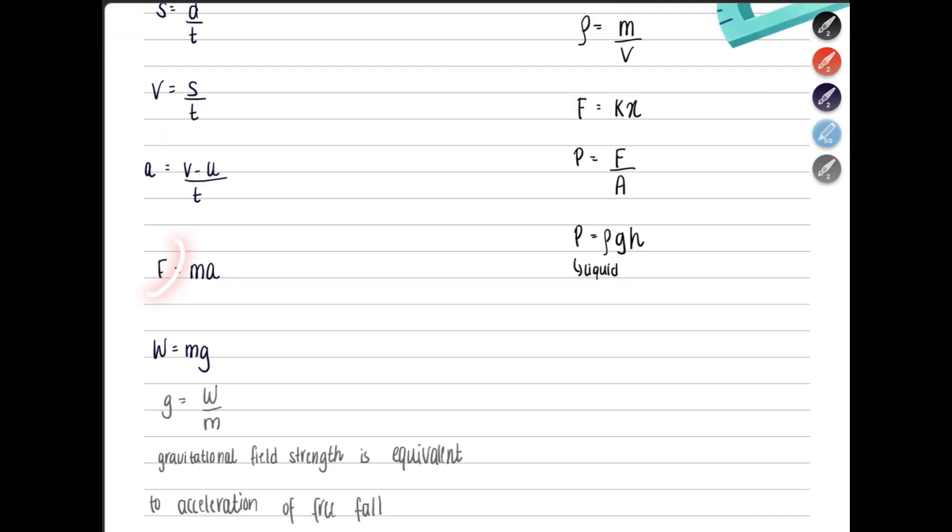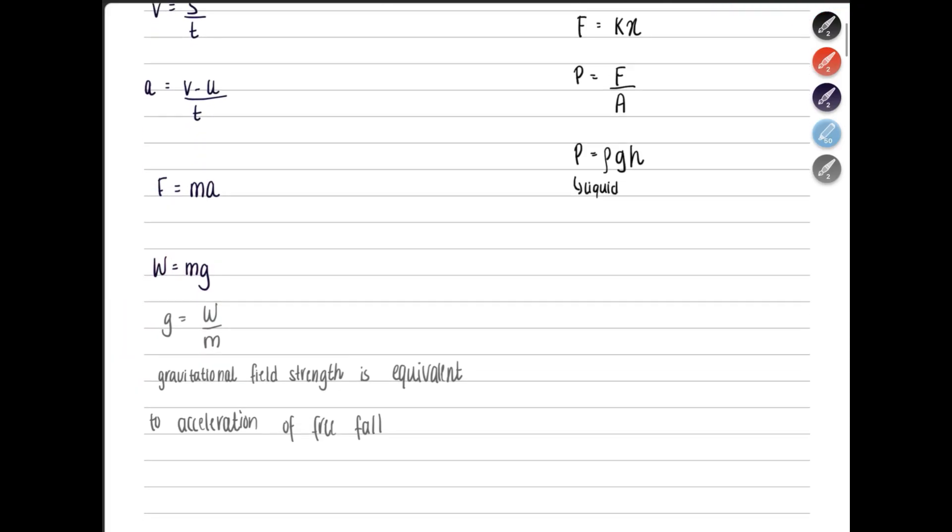Moving on, we can say resultant force equals mass multiplied by acceleration. This equation can also be written like this because weight is a force, mass multiplied by G. G is the gravitational field strength. It also means acceleration of free fall. Basically, the acceleration experienced by an object when it's falling under the force of gravity. G equals weight over mass.